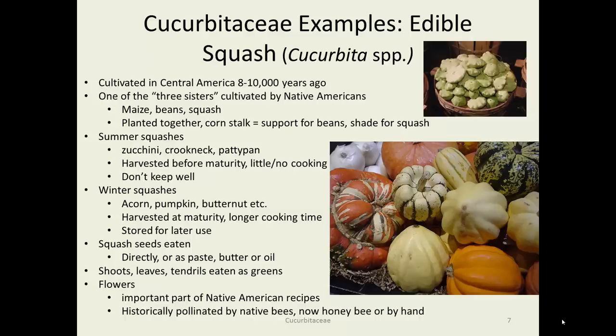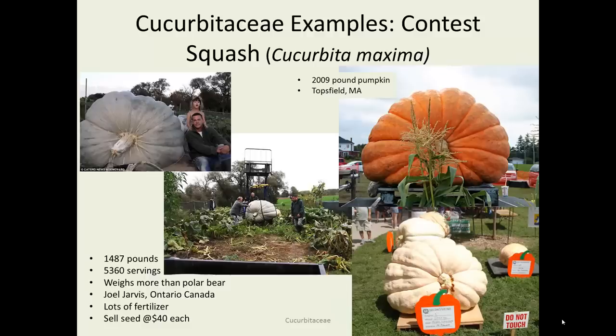Sometimes squash seeds are used for food, either eaten directly or as a paste, and occasionally they're pressed for oil. Shoots, leaves, and tendrils are occasionally eaten as greens from younger plants, and even the flowers are an important part of many Native American recipes — they're pretty big flowers. Historically these are insect pollinated by native bees, but now it's generally honey bees or even by hand in some cases.